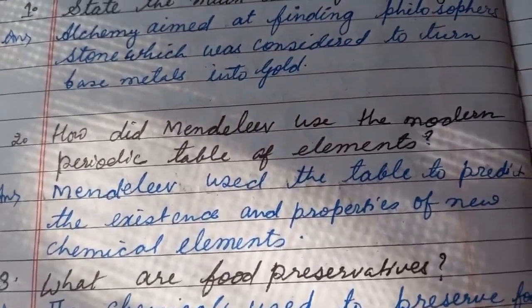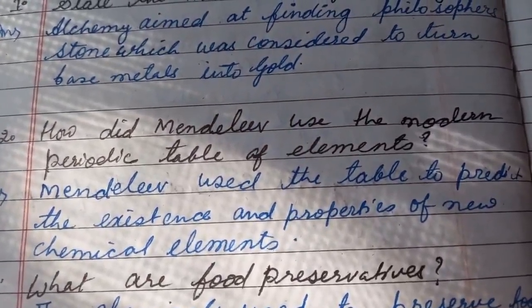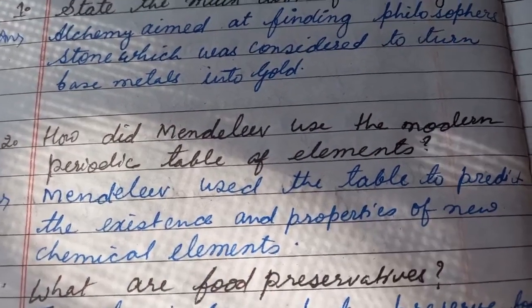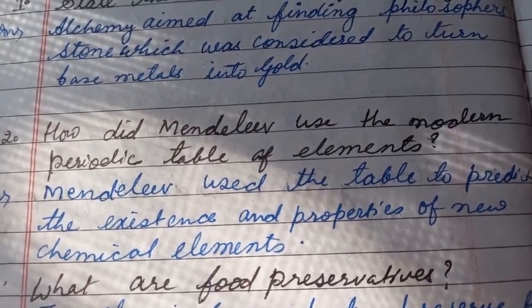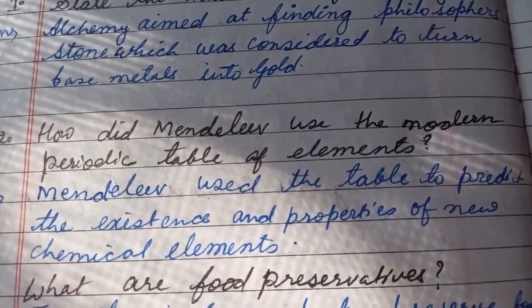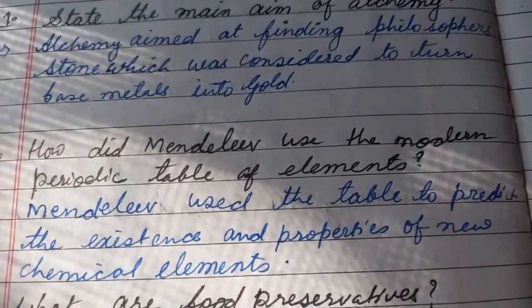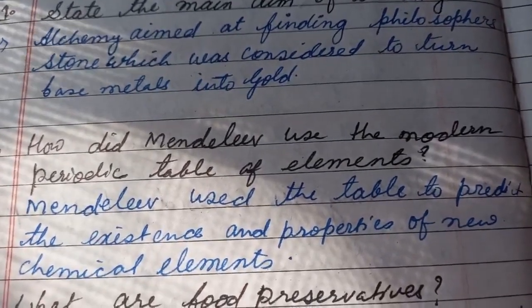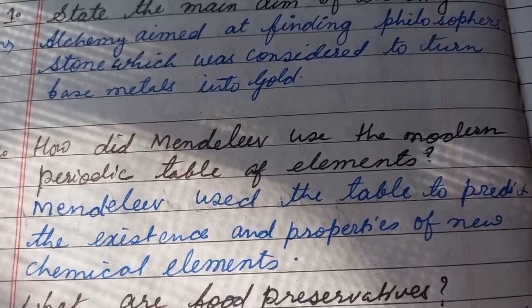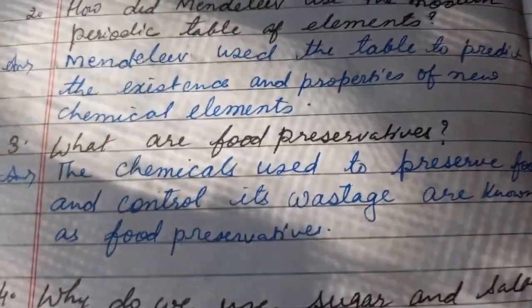Now come to the second question. How did Mendeleev use the modern periodic table of elements? You will write the answer: Mendeleev used the table to predict the existence and properties of new chemical elements. Full stop, answer complete.